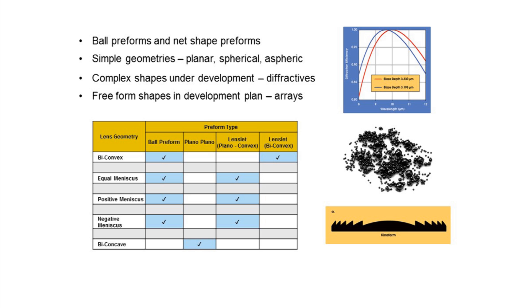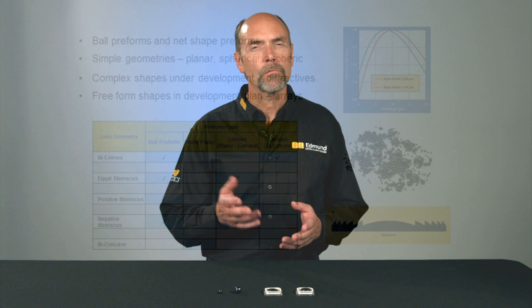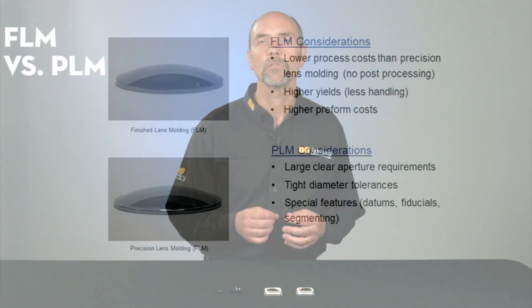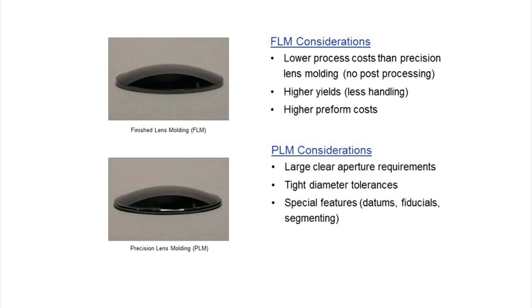We spoke previously about finished lens molding, so now we'll look at finished lens molding versus precision lens molding and the difference between them. With finished lens molding, the part is totally complete — diameter to size, center thickness, all surfaces are final. With precision lens molding, we let the diameter free-form. We might do that to enable a lower cost preform, or if there's post-processing required — datums or flats on the diameter around the lens — we would free-form the diameter and then come back and cut that later.